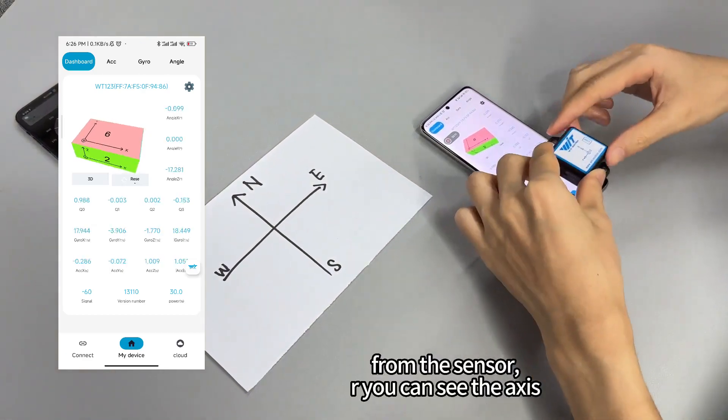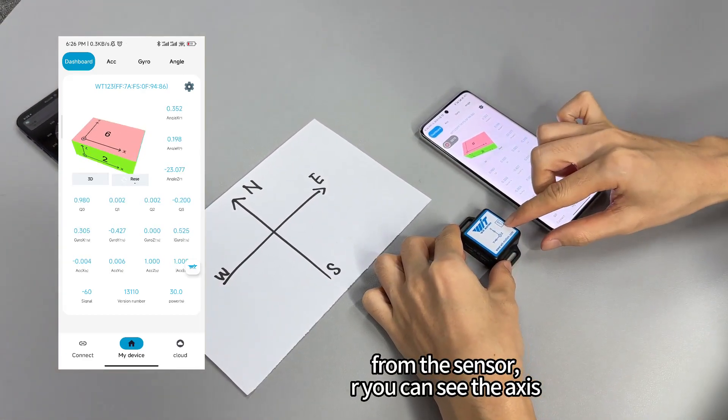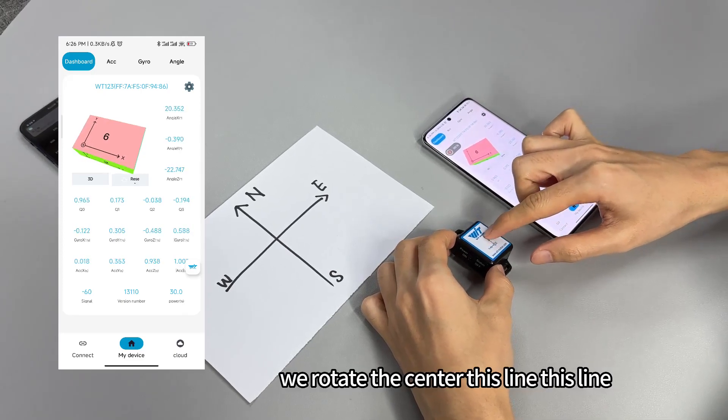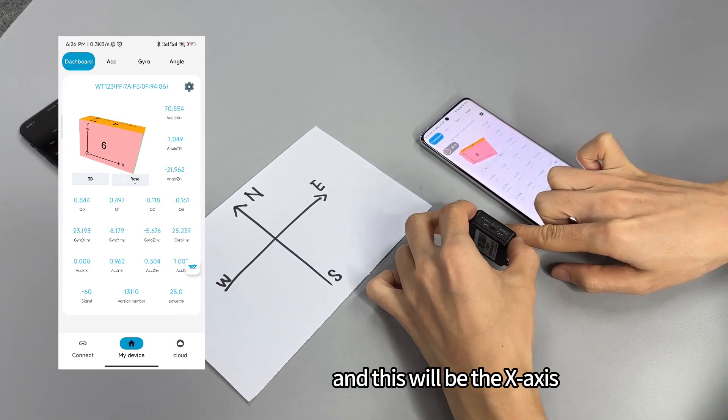We're going to explain the center's style. From the center, you can see the axis. We rotate here. We rotate the center, this line, this line. This will be the S axis.